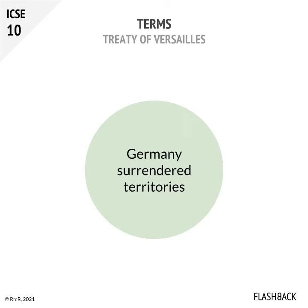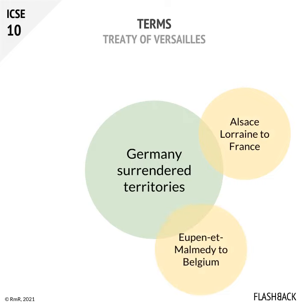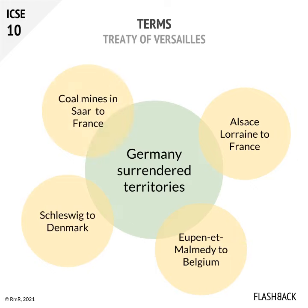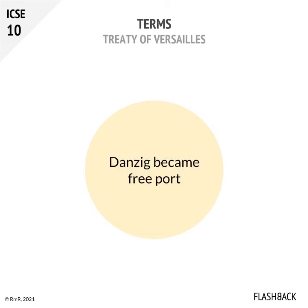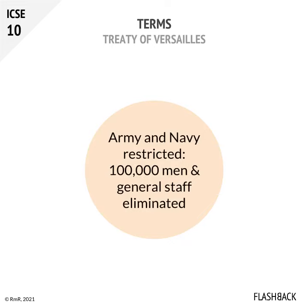Germany surrendered the following colonies: Alsace-Lorraine to France, Eupen and Malmedy to Belgium, Schleswig to Denmark, and the coal mines in the German area called Saar were ceded to France. Danzig became a free port. The German army and navy were severely restricted — they were permitted to have only 100,000 men and the general staff was eliminated.